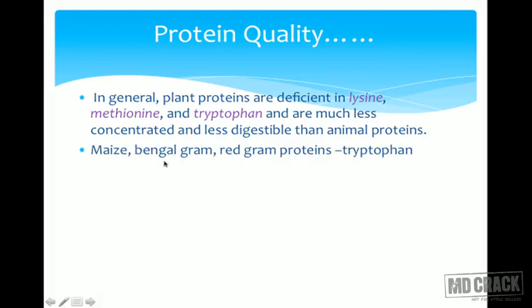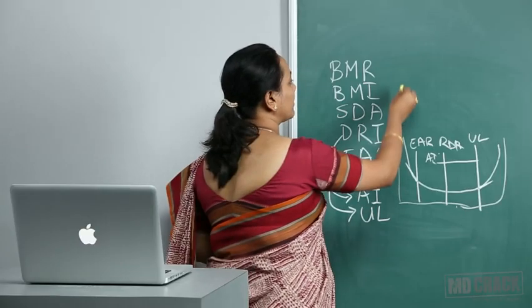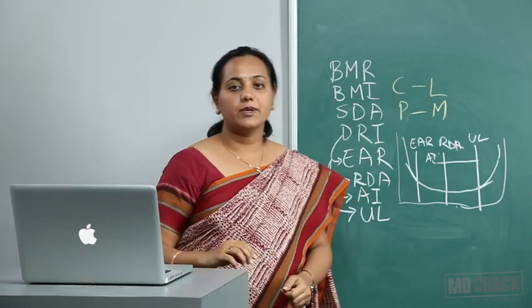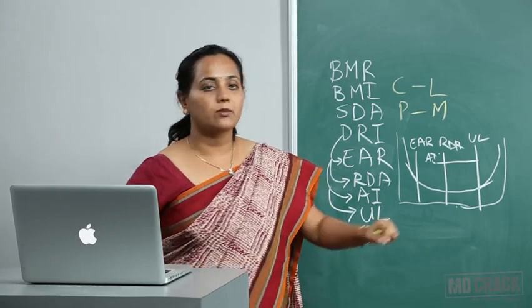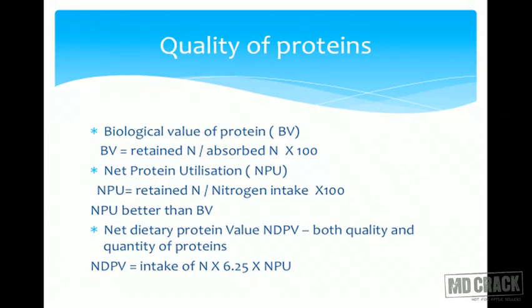Plant proteins are generally deficient in lysine, methionine, and tryptophan, and are less concentrated and less digestible than animal proteins. Maize, Bengal gram, and red gram proteins are deficient in tryptophan. Cereals like wheat are deficient in lysine. Pulses are deficient in methionine — remember: CLPM — Cereals deficient in Lysine, Pulses deficient in Methionine. The deficient amino acid is called the limiting amino acid, and this can be overcome by mutual supplementation — combining a cereal with a pulse provides all required essential amino acids.